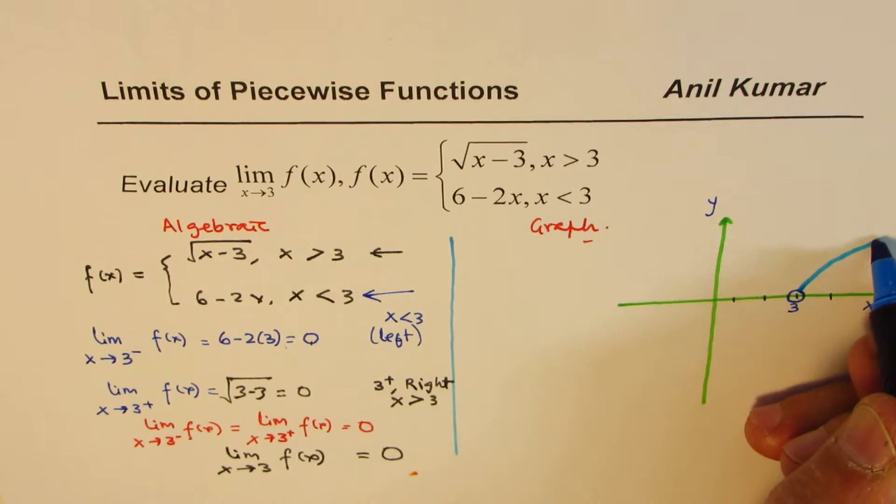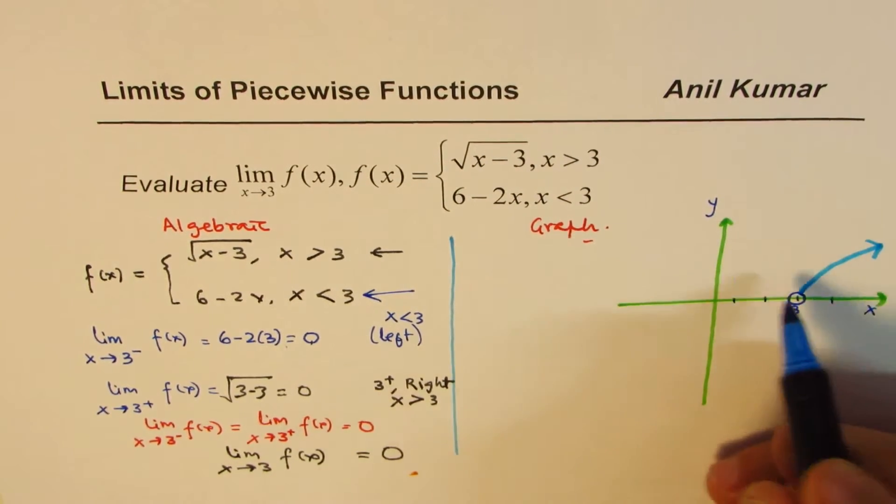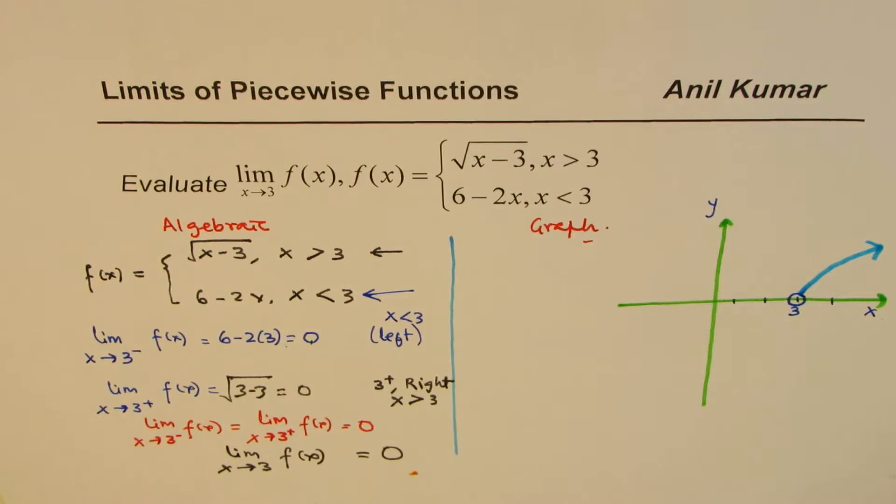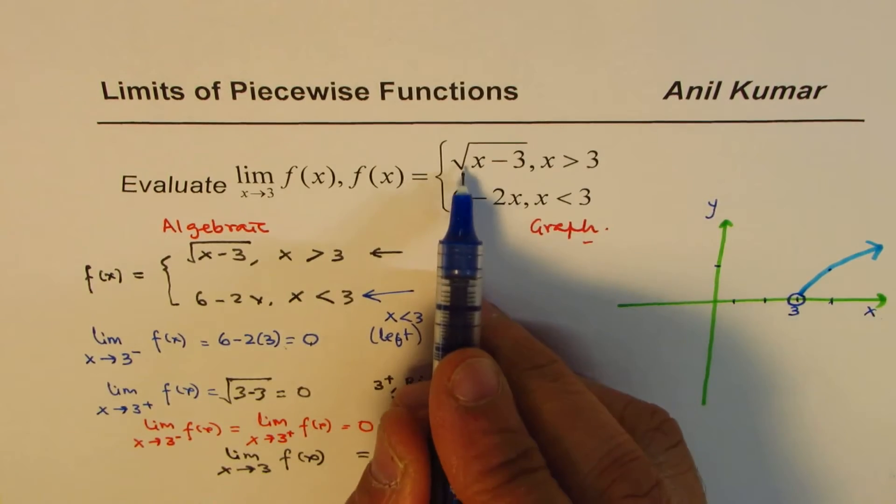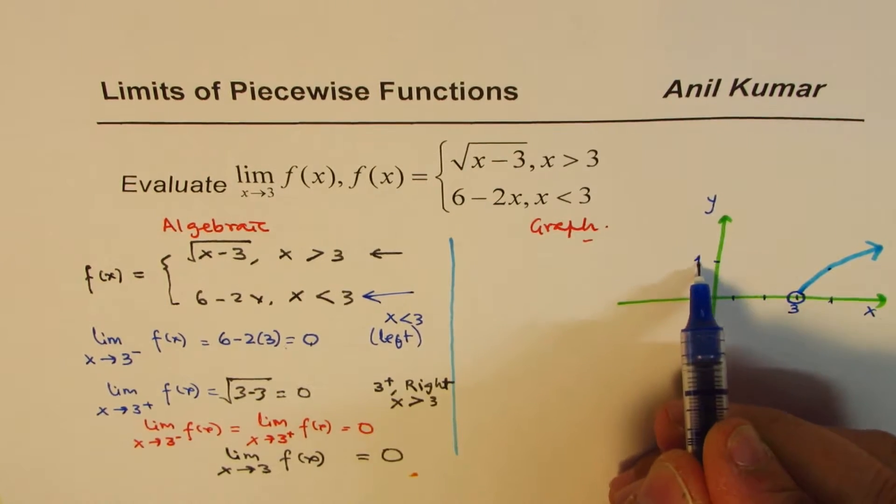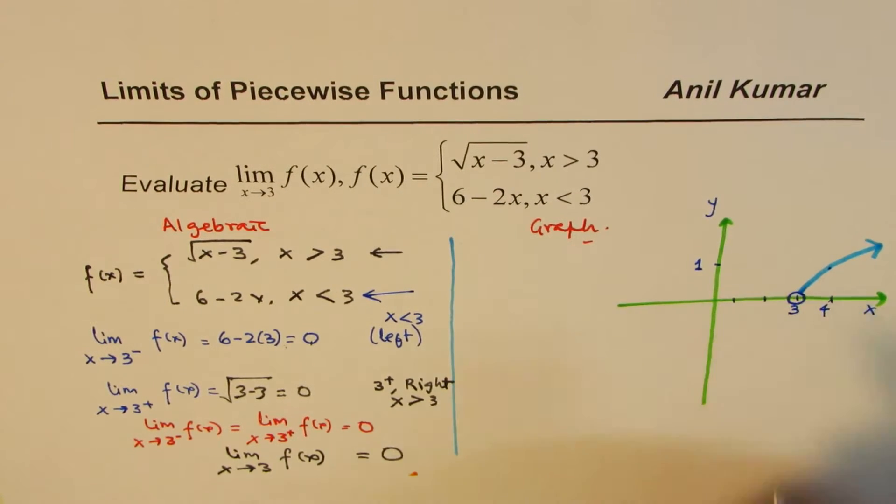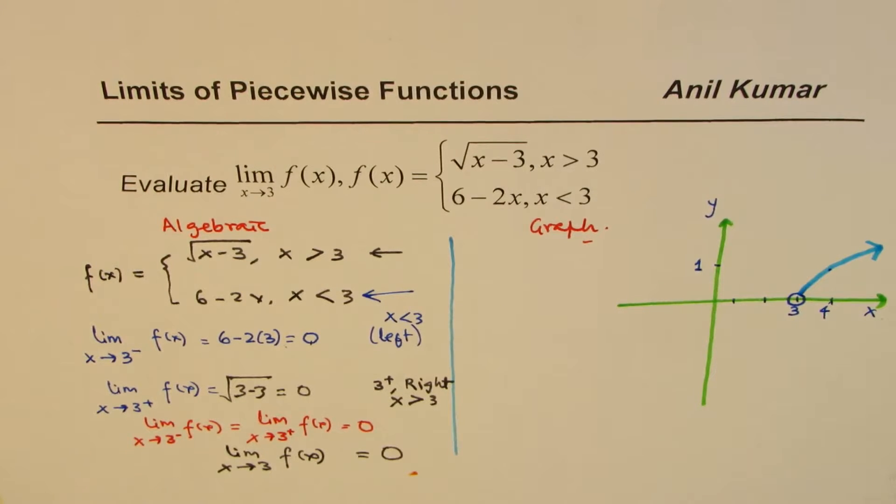So it is going to be kind of like this. You can make table of values and figure it out. So this value here will be 1. So if I write 4 here, square root of 4 minus 3 is 1. So that kind of like this.